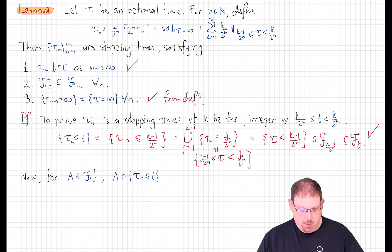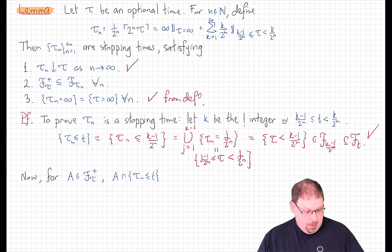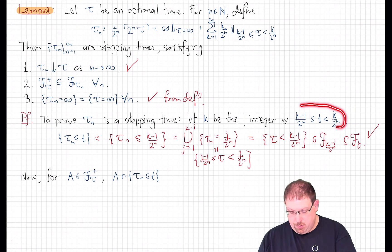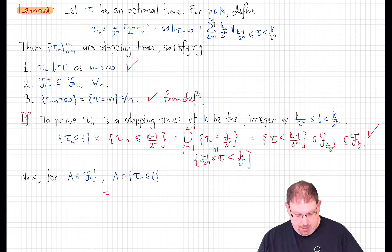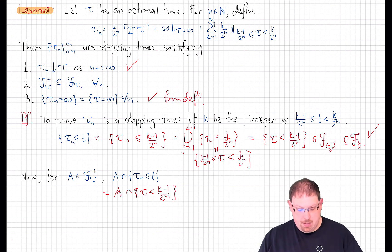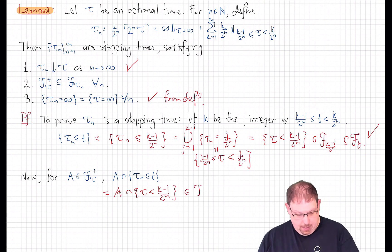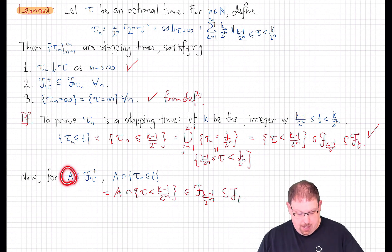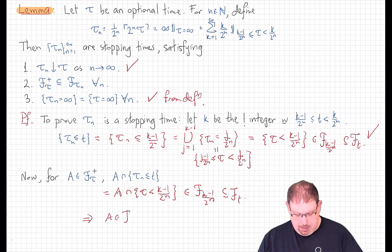Now we just need to show the sigma-field inclusion holds. An event A is in F_{tau_n} if and only if A intersected with the event {tau_n ≤ t} is in F_t for every positive t. With k chosen for a particular t as above, the event {tau_n ≤ t} is the event {tau < (k−1)/2^n}. From the definition of F_{tau_+}, that is in F_{(k−1)/2^n}, which is contained in F_t. So if A is in F_{tau_+}, then A intersected with {tau_n ≤ t} is in F_t, which by definition means A is in F_{tau_n}. That shows the inclusion holds and concludes our proof.